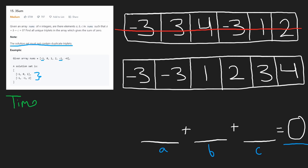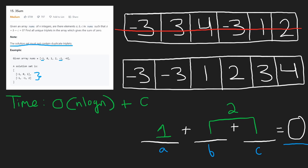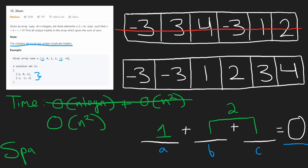In terms of time complexity, we are sorting the array, which is O(n log n). Then instead of the brute force triple loop — which would be O(n³) — we use one loop for the first value and a two-pointer loop to solve Two Sum, giving us two nested loops total. That's O(n²), so the overall time complexity is O(n²). The space complexity is either O(1) or O(n) depending on your sorting implementation, since sorting can take extra memory in some libraries.